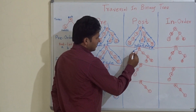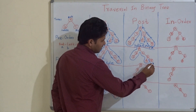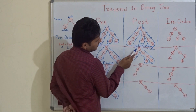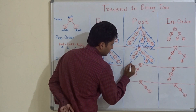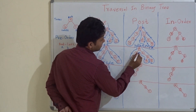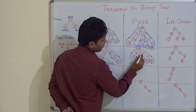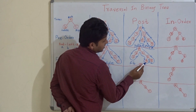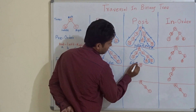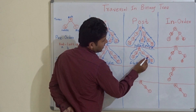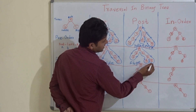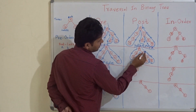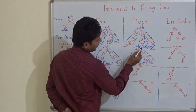For the next example, draw the traversal and mark direction. A — not last visit. B — not last visit. F — yes, last visit, write F. B — yes, last visit, write B. A — not last visit. C — not last visit. D — not last visit. G — yes, last visit, write G. D — not last visit. E — yes, last visit, write E. D — yes, last visit, write D. C — yes, last visit, write C. A — yes, last visit, write A. Post-order: F, B, G, E, D, C, A.